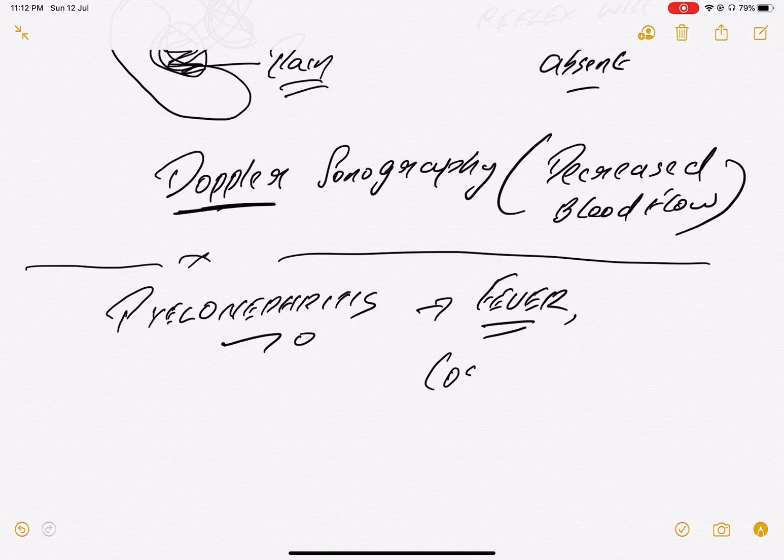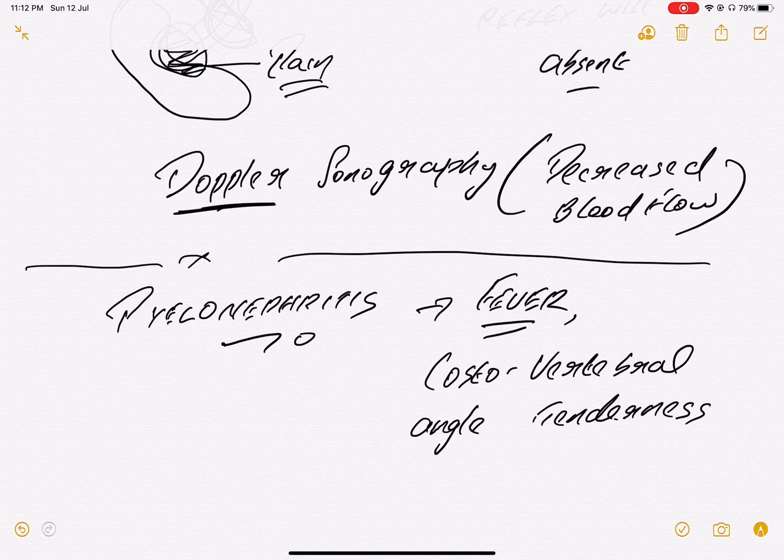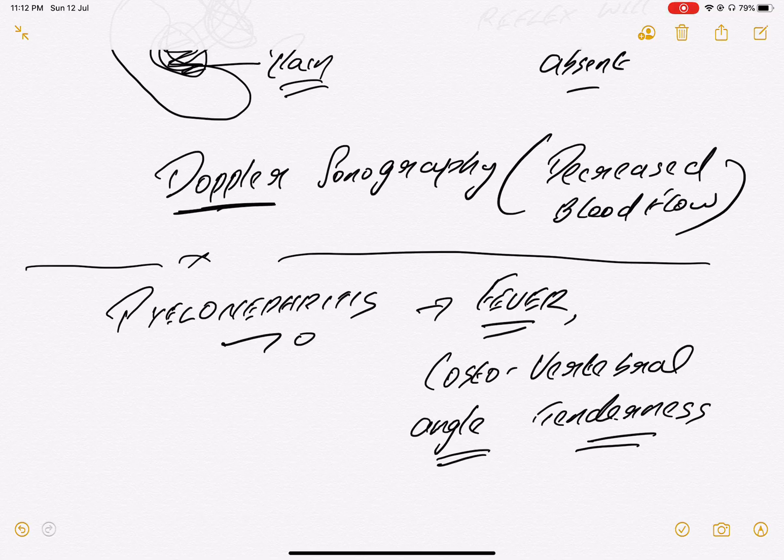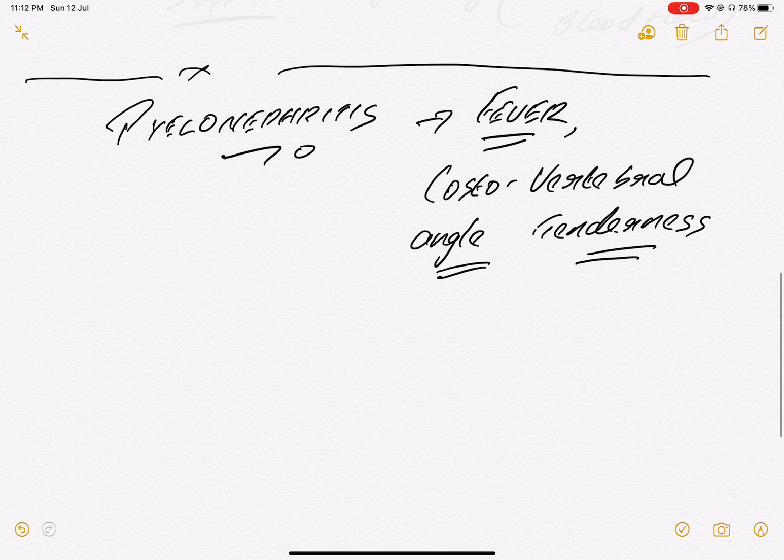So fever is a sure-shot characteristic for pyelonephritis. And one more thing they will give you: costovertebral angle tenderness. So these are sure-shot buzzwords or keywords they use to give in the question. Pyelo: parenchyma of kidneys affected. Nephritis means inflammation. So fever is a sure-shot thing and costovertebral angle tenderness, both will be seen with pyelonephritis.